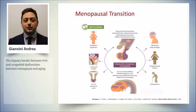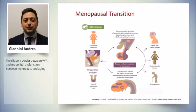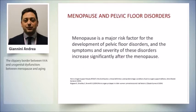It's well known what happened to different systems through the menopausal transition and after menopause, but it's very interesting to focus our attention on urogenital atrophy, or more generally on pelvic floor disease during menopausal transition, because menopause is a major risk factor for the development of pelvic floor disorder, and symptoms and severity of this disorder increase significantly after menopause.